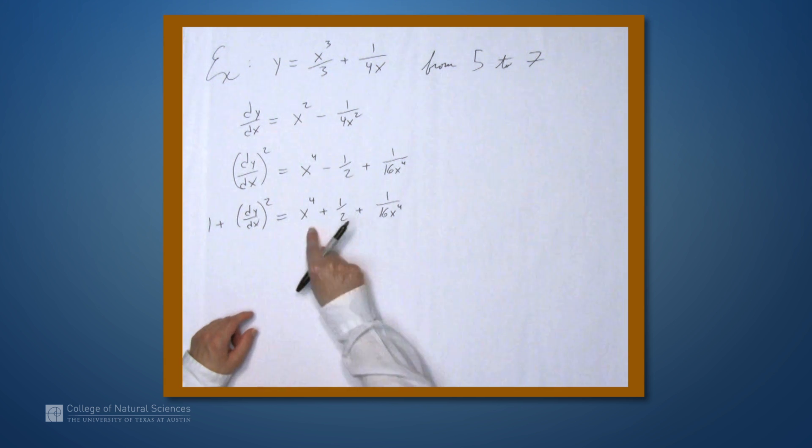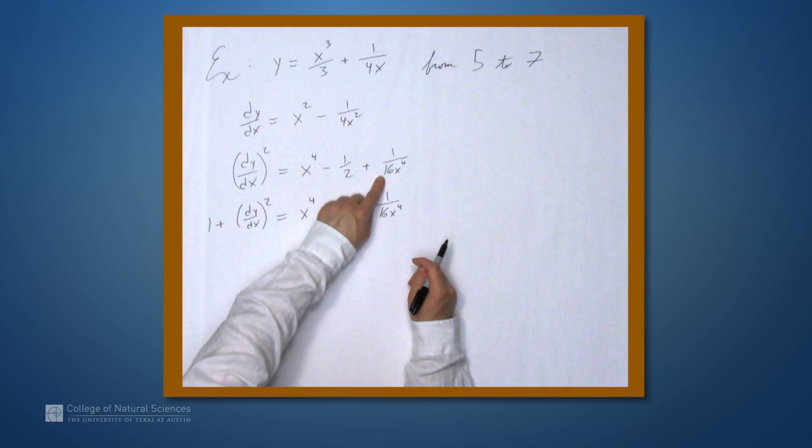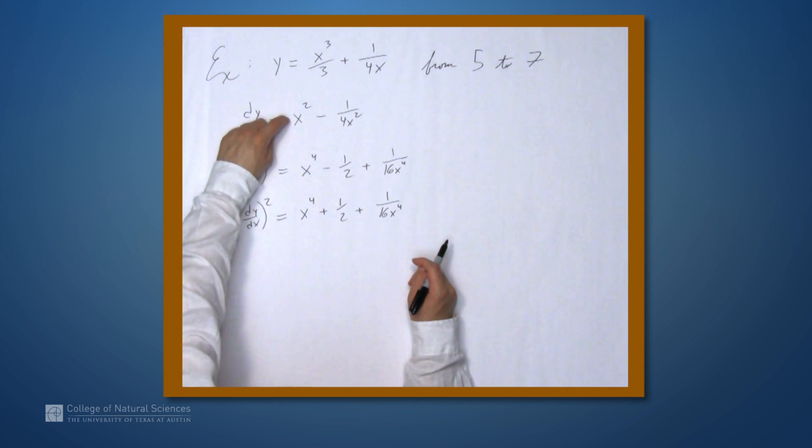Now, what can we do with this thing? Well, this expression here, x to the fourth minus 1 half plus 1 over 16x to the fourth, arose from squaring this term, x squared minus 1 over 4x squared.